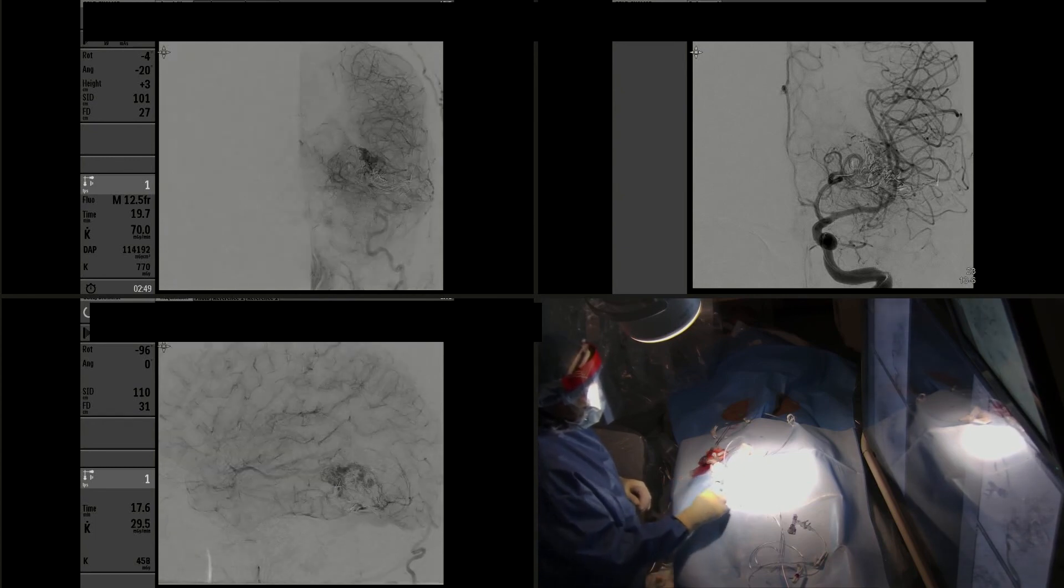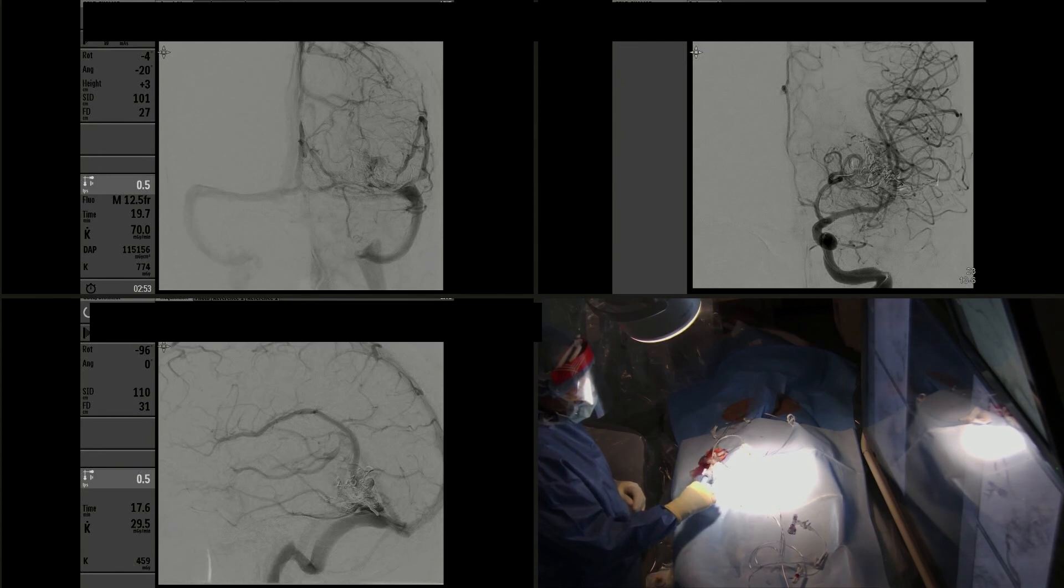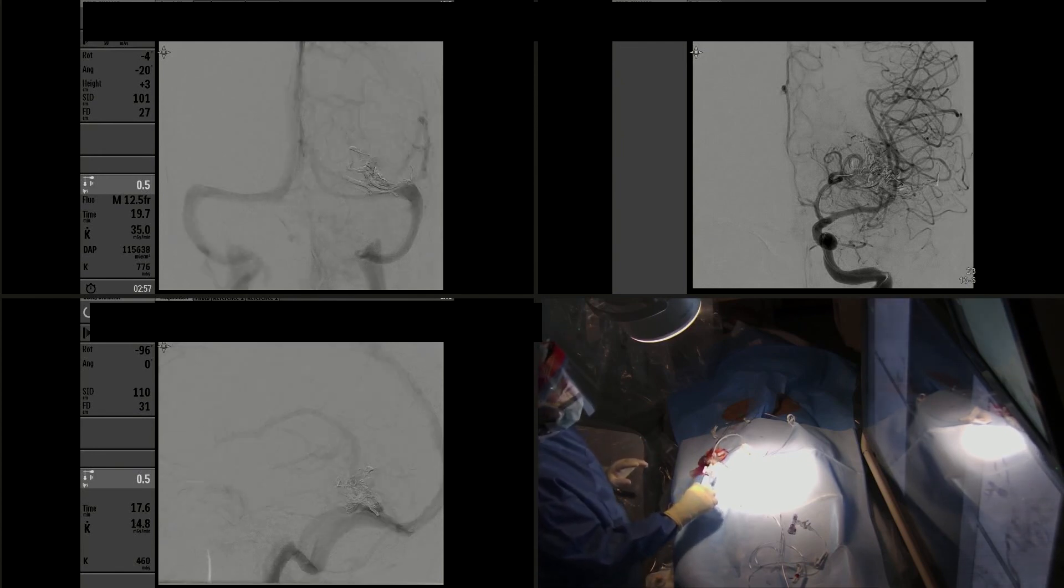The angiogram shows that there has been significant devascularization with residual arterial shunting and without venous outflow restriction. The patient went to the operating room, and the post-operative angiogram after resection demonstrates complete obliteration of the AVM without thromboembolic complications.